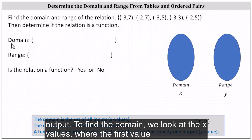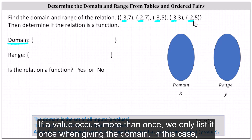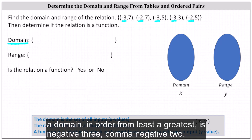To find the domain, we look at the x values — the first value of each ordered pair. We have negative three, negative two, negative three, negative three, and negative two. If a value occurs more than once, we only list it once when giving the domain. In this case, the domain, in order from least to greatest, is negative three, negative two.